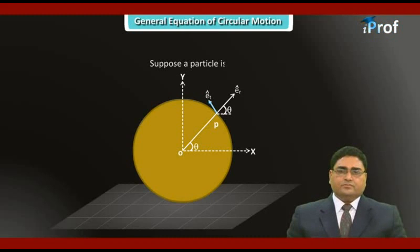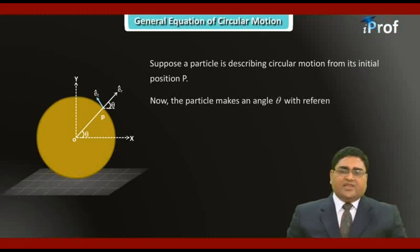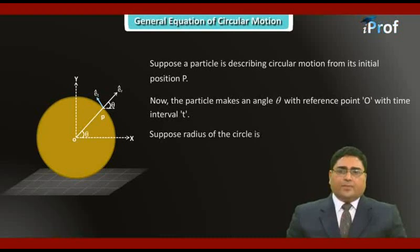Suppose a particle is describing circular motion from its initial position P. The particle makes an angle theta with reference point O in time interval T. Suppose the radius of the circle is small r.